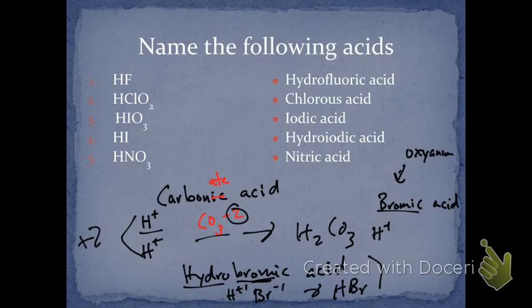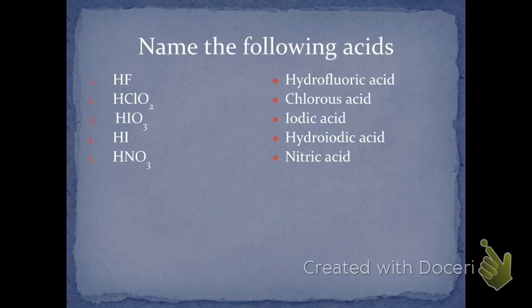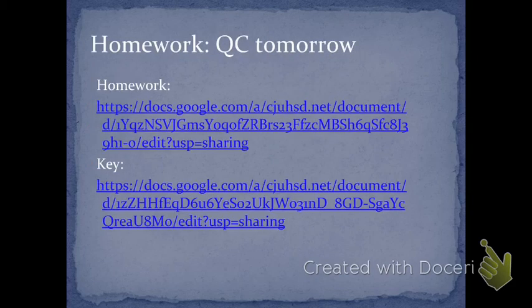So bromic is going to be bromate, right? Ic goes back to ate. Bromate is BrO3 negative 1, so this is going to be HBrO3, okay? There's quite a few practice problems here that you can work on.